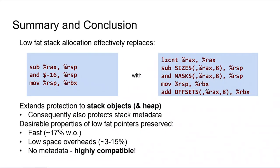To summarize: we replace the standard stack allocator with a sequence of instructions using our new scheme, without changing anything else — the instrumentation and low-fat pointer encodings are the same. That's all you need to do and everything works: you get bounds protection for stack objects while preserving all the desirable properties of low-fat pointers — it's fast, has low space overheads, and is highly compatible. That concludes my talk. Thank you.